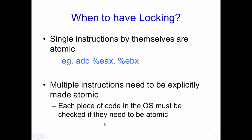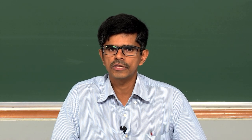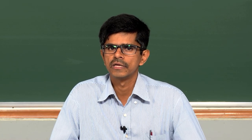The use of lock and unlock constructs ensures that the critical section is atomic. Single instructions such as add EAX to EBX are themselves atomic and do not require explicit locking. However, when you have a sequence of multiple instructions that must be made atomic, explicit locking and unlocking is required. Each piece of code in the operating system must be checked to determine if it needs to be made atomic — particularly code involving interrupt handlers. In the next video, we will see how such locking and unlocking mechanisms are implemented in systems.